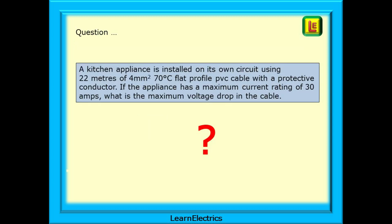Question. A kitchen appliance is installed on its own circuit using 22 metres of 4 square millimetre 70 degree centigrade flat profile PVC cable with a protective conductor. If the appliance has a maximum current rating of 30 amps what is the maximum voltage drop in the cable? And there will then follow four possible answers and only one of which is correct. So how would we even begin to answer this question?